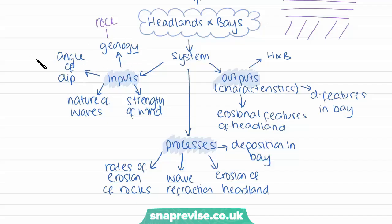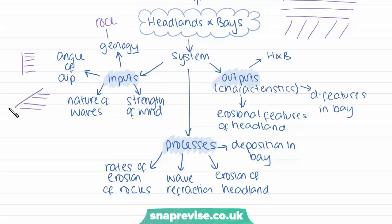Another input is the angle of the dip — the angle of the rocks — where steeper cliff faces with horizontal strata are eroded much more easily in comparison to places where we have a less steep angle of dip, which is eroded less easily. Also the nature of the waves: if we have high energy waves, there's going to be more erosion; lower energy waves mean less erosion. And also the strength of the wind — higher winds mean more erosion, and weaker winds mean less erosion. So those are the inputs into our system for creating headlands and bays.